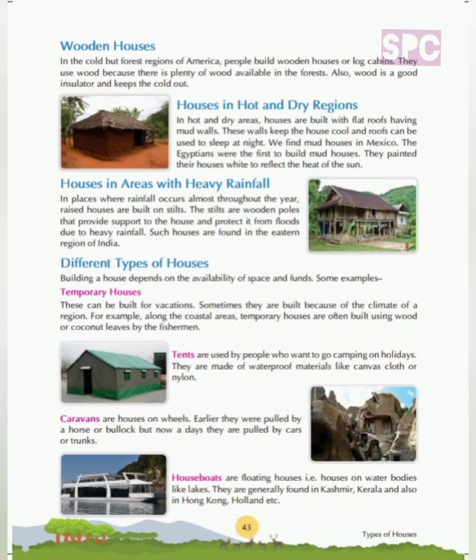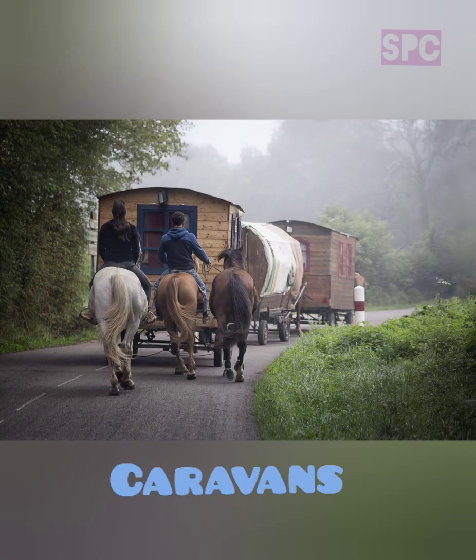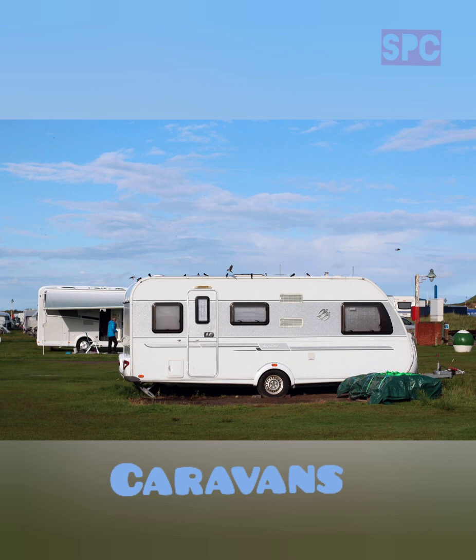Caravans are houses on wheels. Earlier they were pulled by a horse or bullock, but nowadays they are pulled by cars or trucks. Due to advancement in technology, we now have high-tech caravans pulled by cars or trucks. People who keep on moving from one place to another prefer to live in caravans.